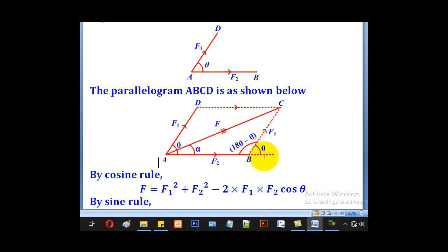And also this will also be theta corresponding angles. Angles in a straight line add up to 180, so this remaining angle will be 180 minus theta. Now this one shall let it be alpha, because we have to get the magnitude and the direction of the resultant.